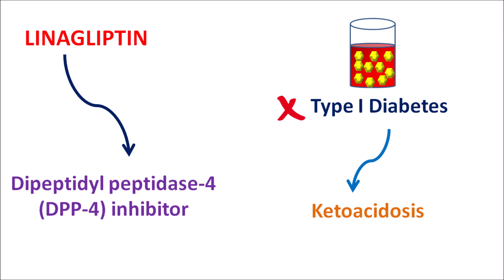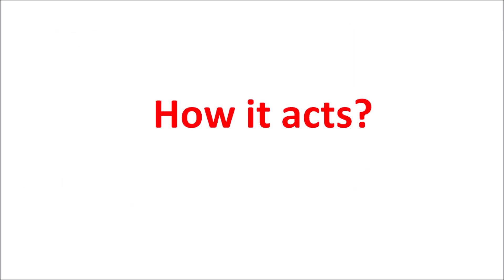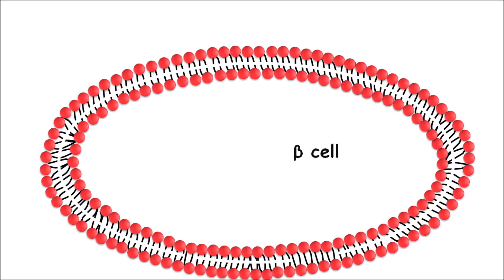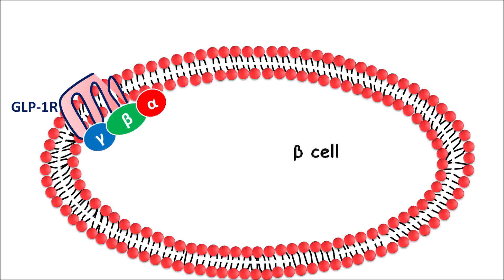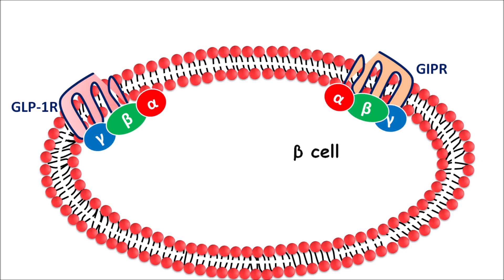Now let us see what are the important precautions, side effects, and doses of linagliptin and how this drug acts. First, let us see how this drug acts. On the beta cells of the pancreas, different types of receptors and ion channels are expressed. One of the receptors are GLP1 receptors — receptors for GLP1, glucagon like peptide 1. These are G protein coupled receptors coupled with alpha, beta, gamma subunits. Another incretin receptor is the GIP receptor, for glucose dependent insulinotropic polypeptide GIP, also a G protein coupled receptor.